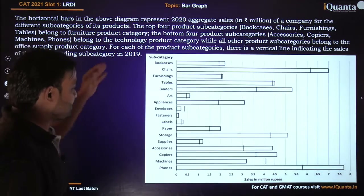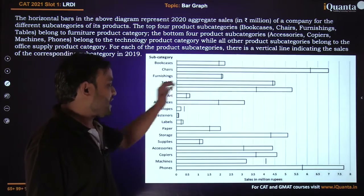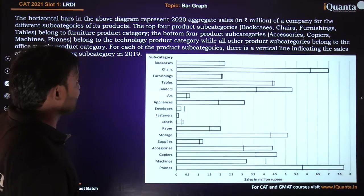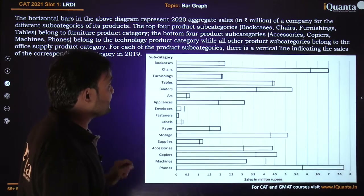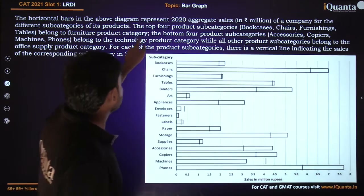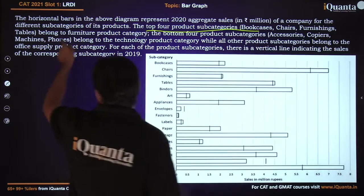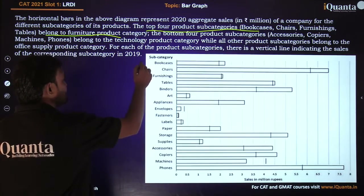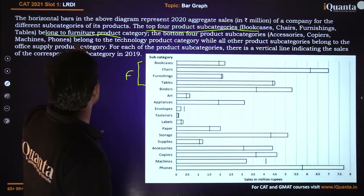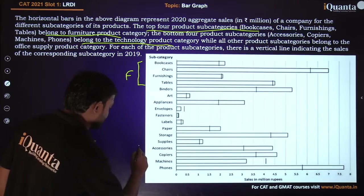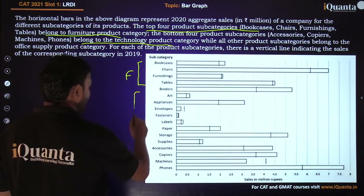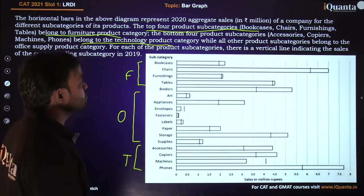Now what does it say? You can see a horizontal bar graph. There are some values given in million rupees. The horizontal bars represent 2020 aggregate sales of a company for different subcategories of its products. The top four products represent existing furniture product categories. The last four products belong to technology product categories, while all other product subcategories belong to office supply categories.